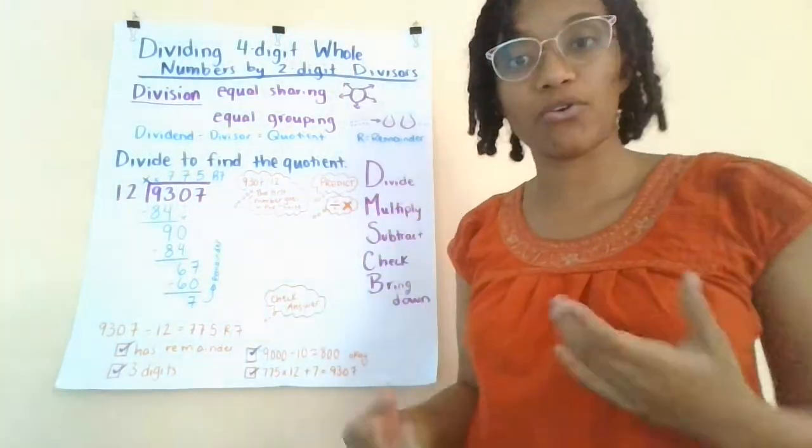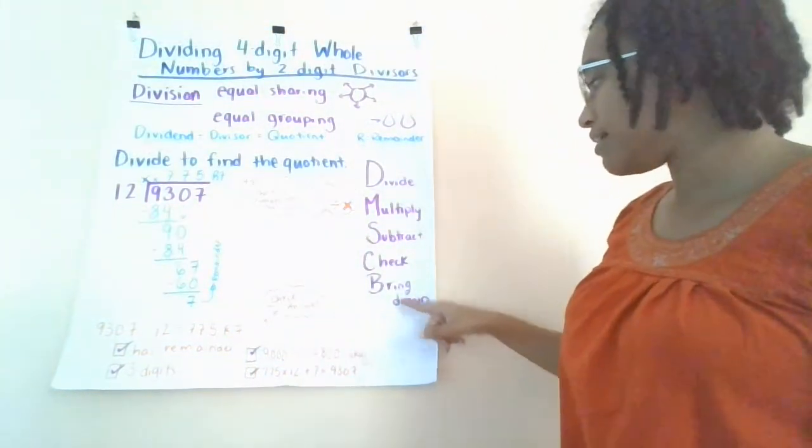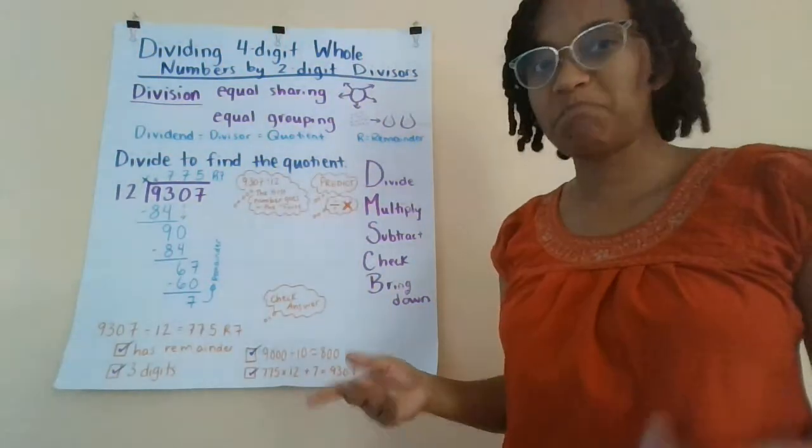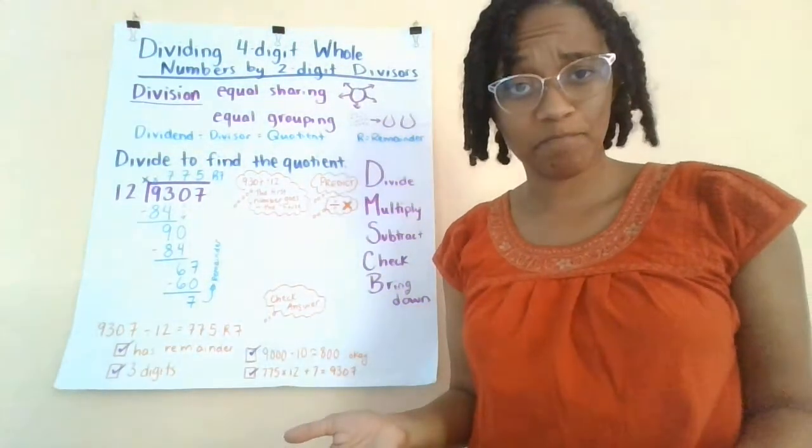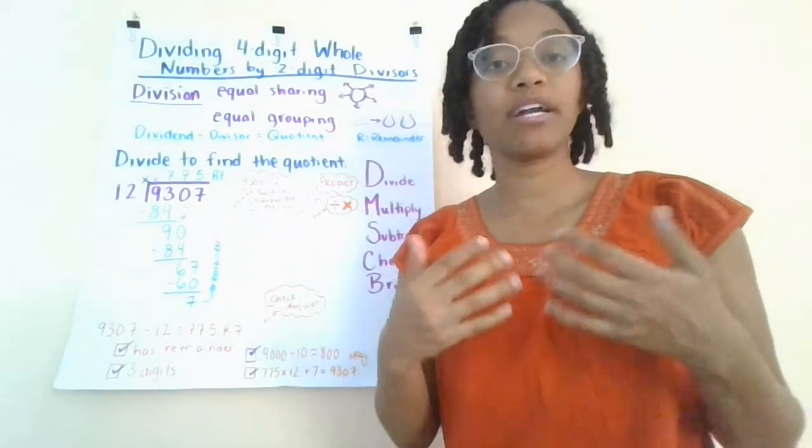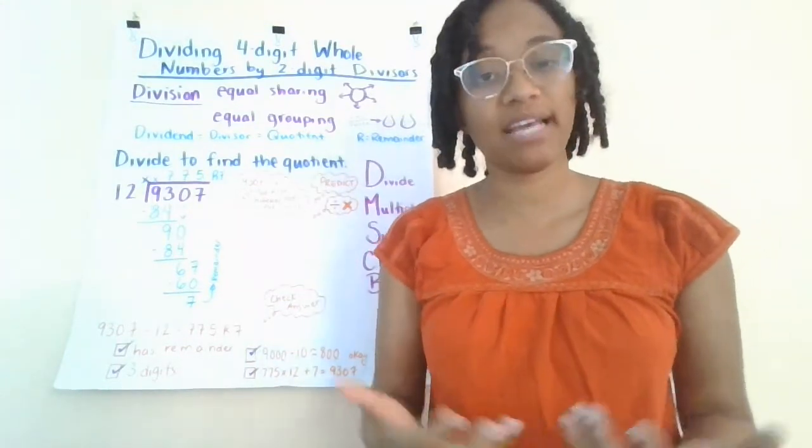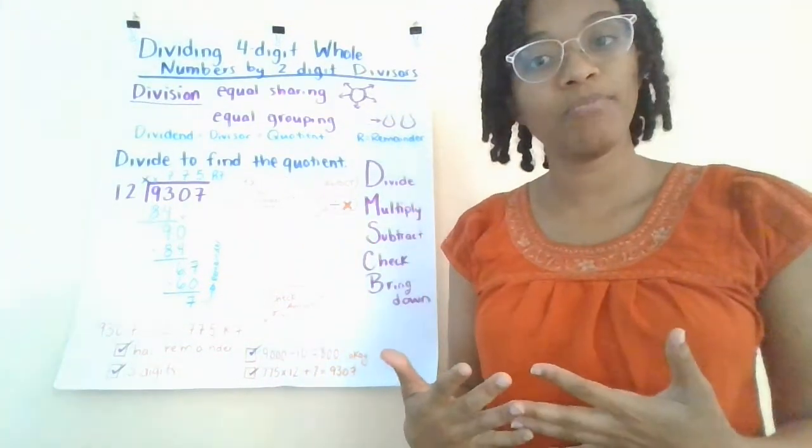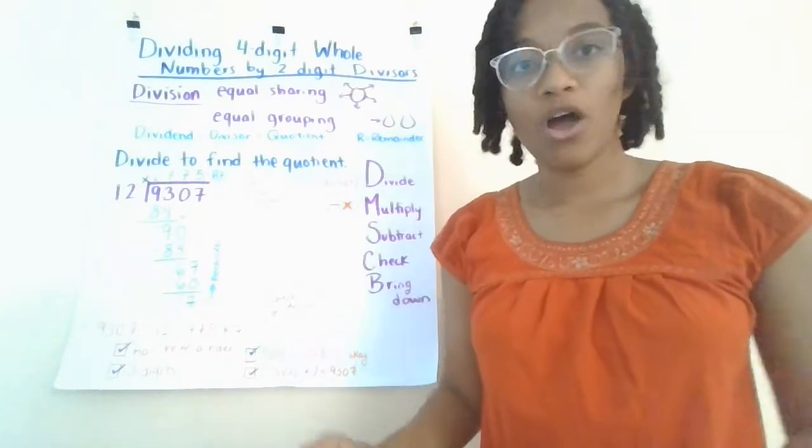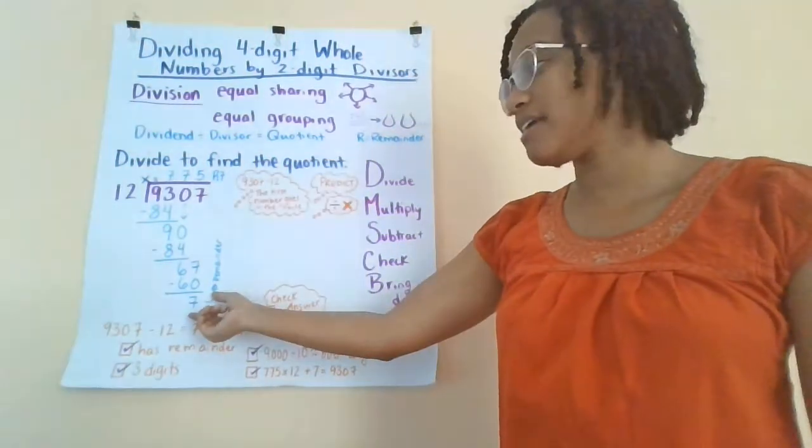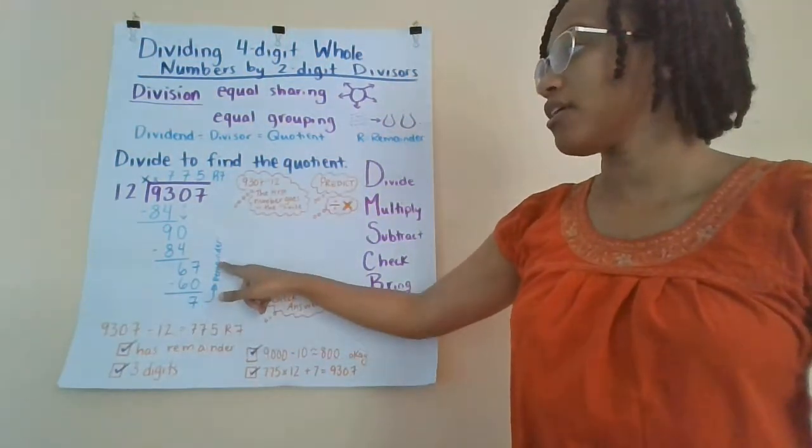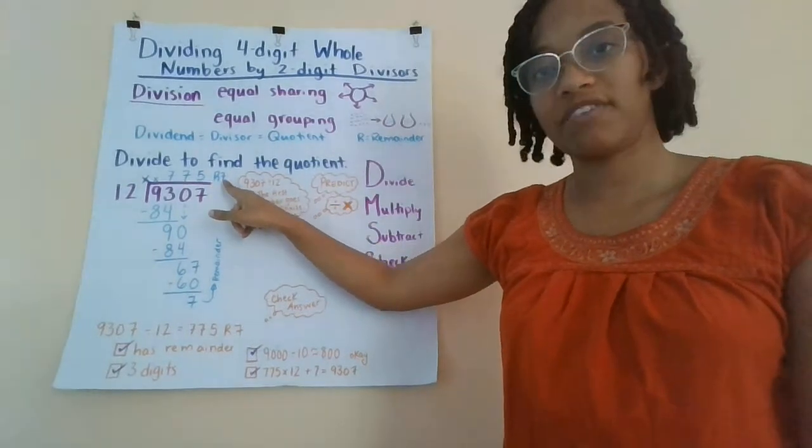Now I check. Is this number smaller than 12? Yes, 7 is definitely smaller than 12. So I would think it's time to bring down. But there's no more numbers to bring down. Well, in this case, since we're giving our quotients with remainders instead of dividing into the decimal, we are all done. All we have to do is designate this 7 as the remainder by writing R7.